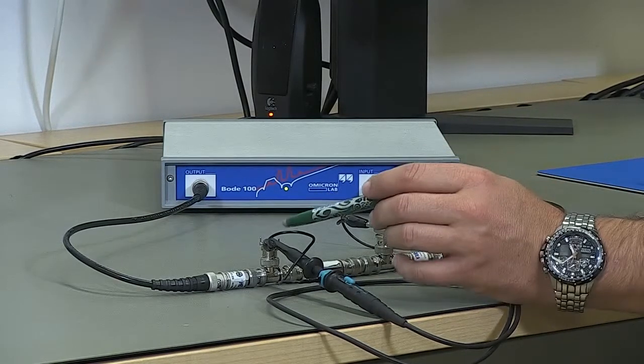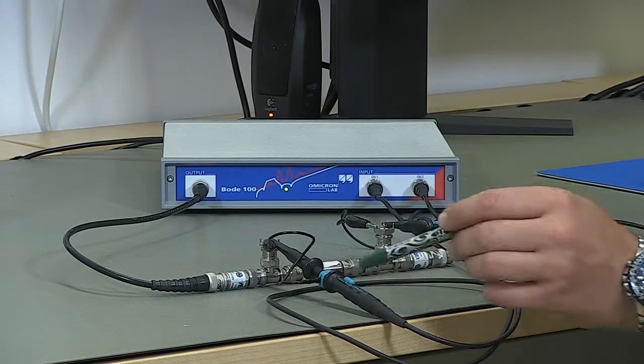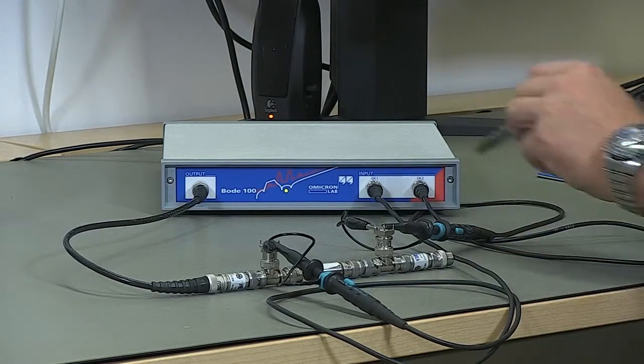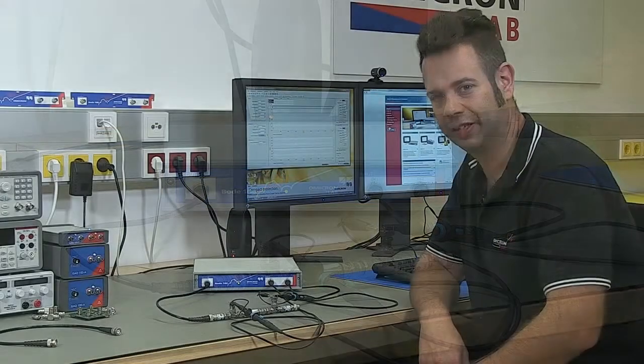We pick up the input voltage of the filter with a probe and lead it to channel 1, and then we pick up the output voltage of the filter and connect it to channel 2. And now we will set up the Bode 100 to perform the measurement.